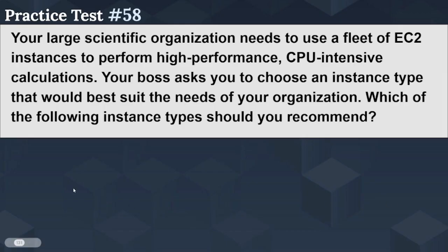The next question is: your large scientific organization needs to use a fleet of EC2 instances to perform high performance, CPU-intensive calculations. Your boss asks you to choose an instance type that would best suit the needs of your organization. Which of the following instance types should you recommend? Option A: C4. Option B: M3. Option C: D2. Option D: R3.